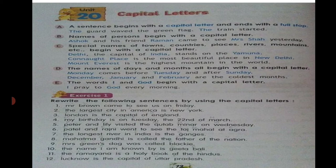The names of days and months all begin with a capital letter. 'Monday comes before Tuesday and after Sunday.' 'December, January and February are the coldest months.' So the days of the week and the months of the year are all written with a capital letter. The words 'I' and 'God' also begin with a capital letter: 'I pray to God every morning.'